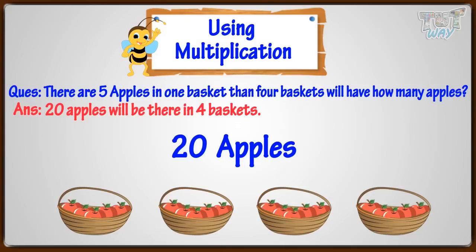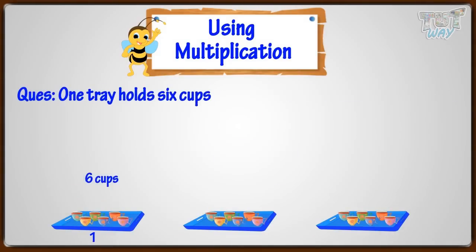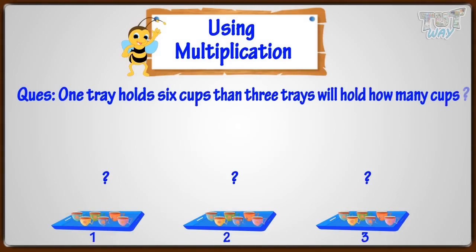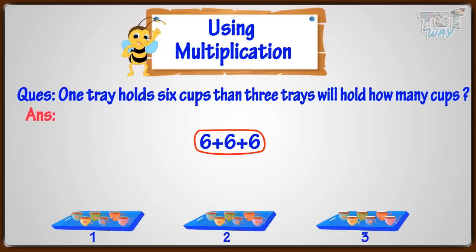Let's move on to another question. One tray holds six cups. Then, three trays will hold how many cups? You need to add six three times here. You can write repeated addition in the form of a multiplication sentence. So, adding six three times can be written as six times three.